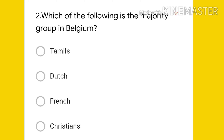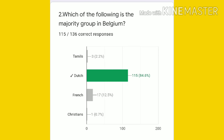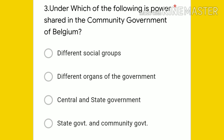Four options are given: Tamils, Dutch, French, and Christians. The answer is Dutch. 115 students gave the right answer; 17 chose French. 59 percent was Dutch, 40 percent was French, and 1 percent was Germans — the three main communities in Belgium.